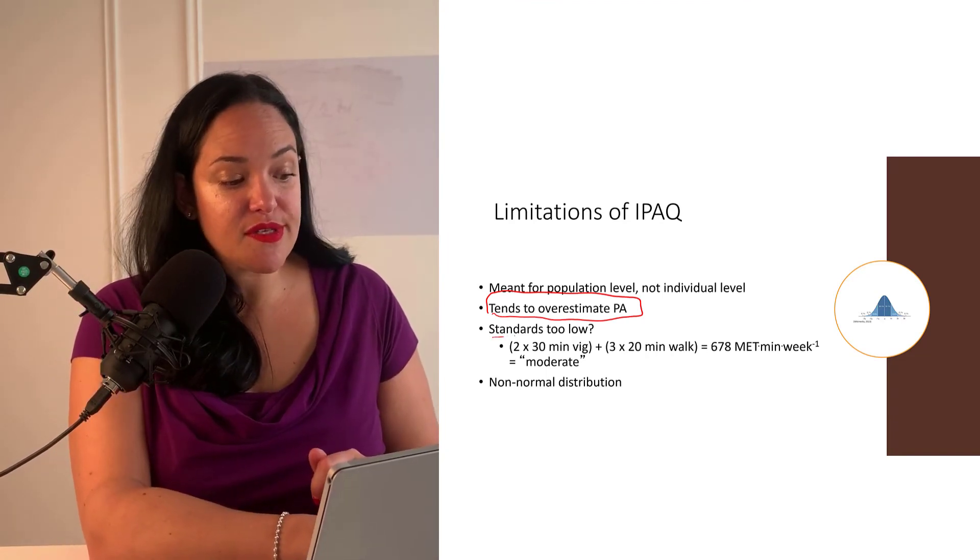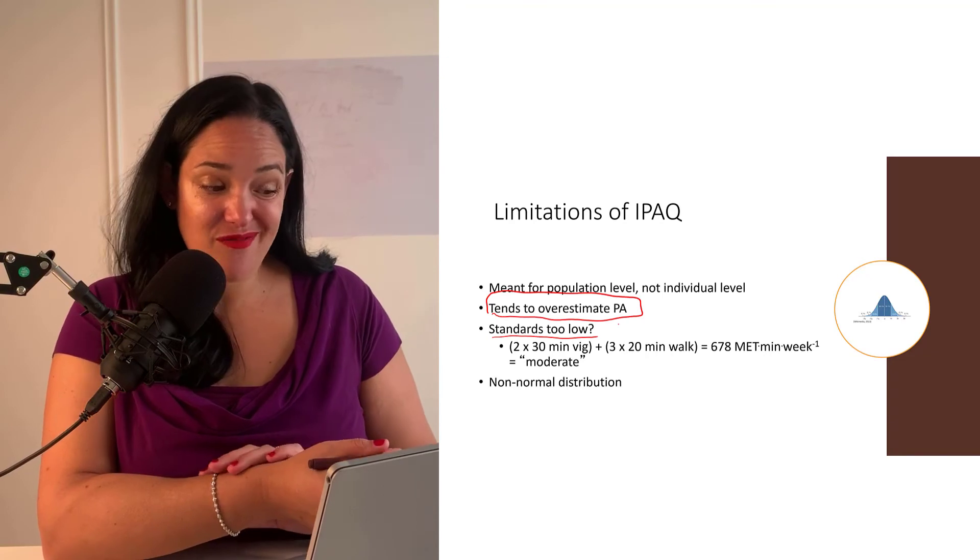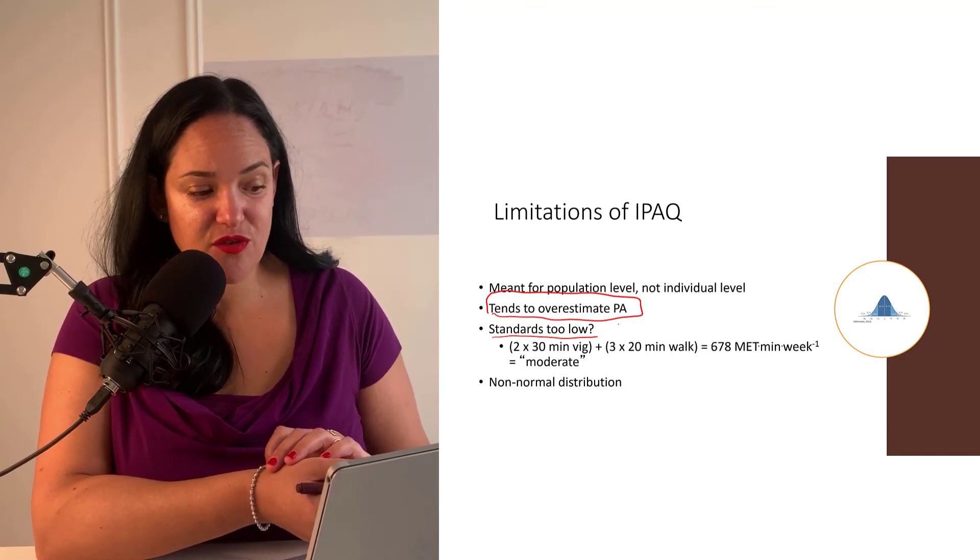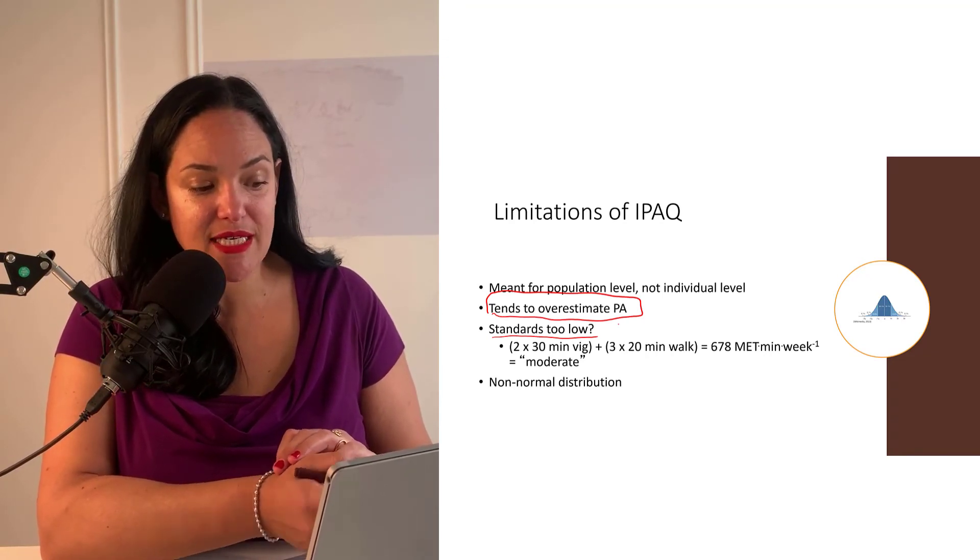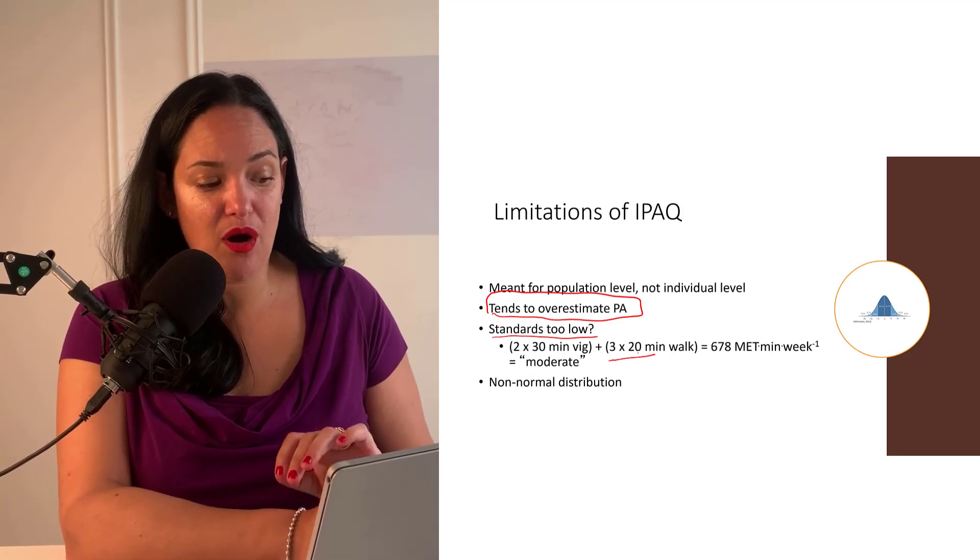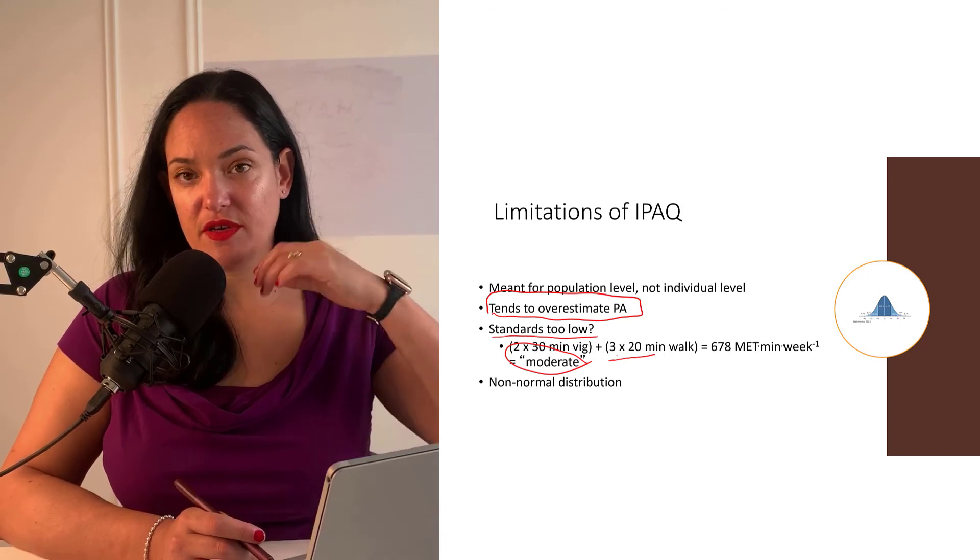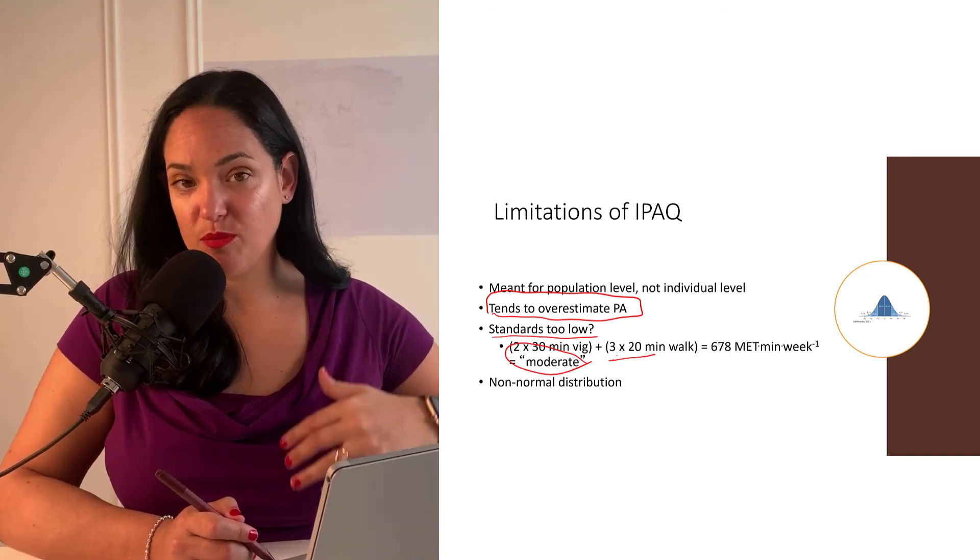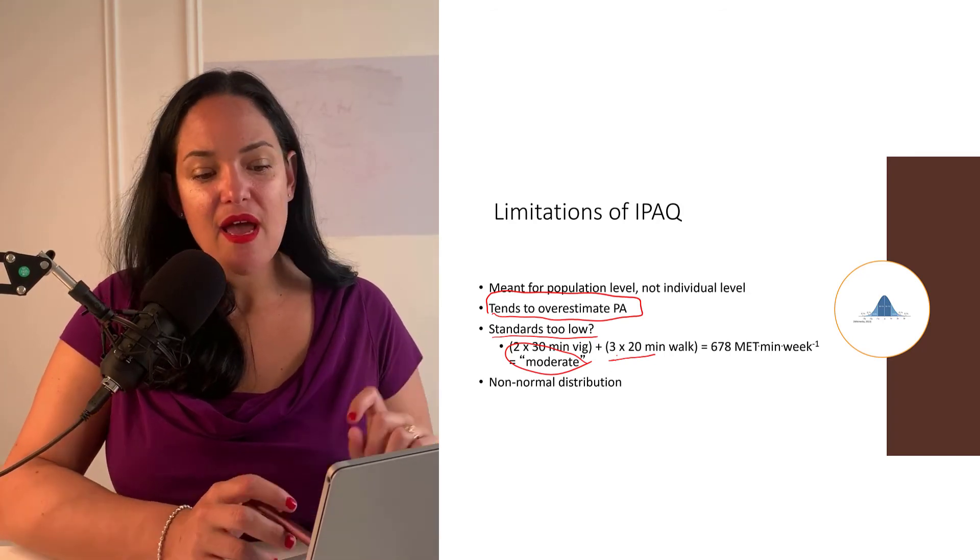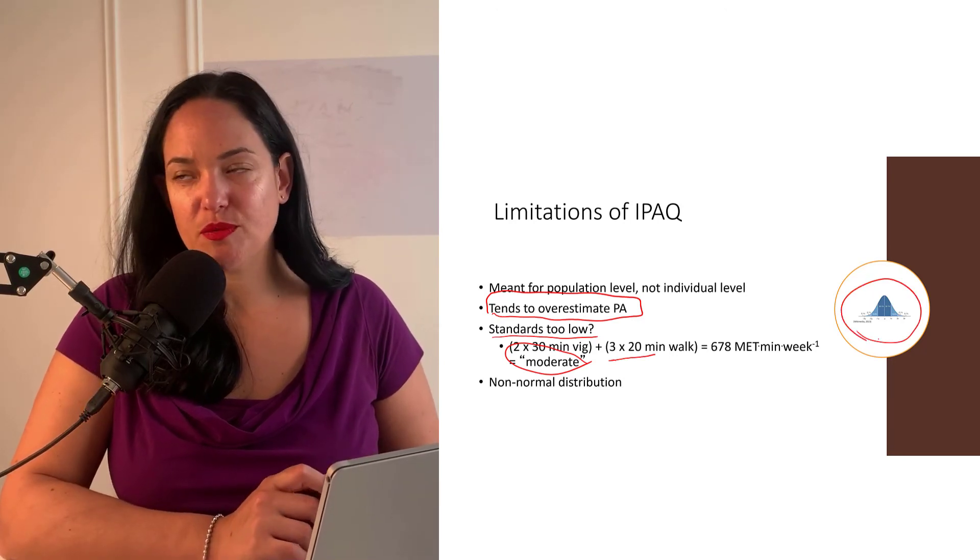You could also argue that the standards are too low. So if I were to get 20 to 30 minute sessions of vigorous intensity activity and three 20 minute walks, that would be considered moderate amounts of physical activity. And you could argue maybe that that would be considered low.